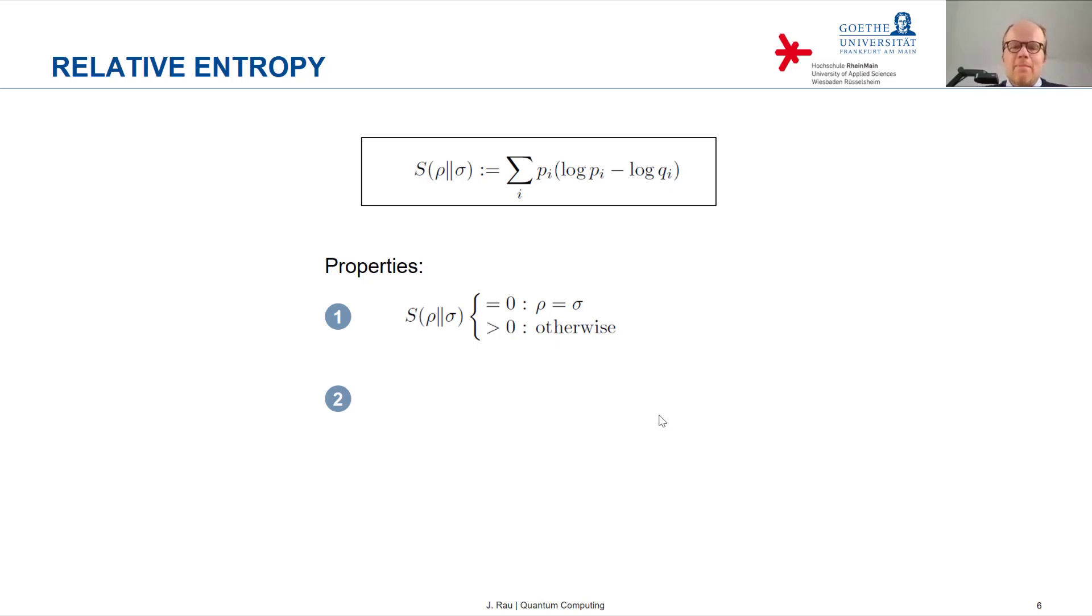It's not in the mathematical sense a metric, however, because the definition of the relative entropy is not symmetric in rho and sigma. So the relative entropy of sigma and rho is not the same as the relative entropy of rho and sigma. If you interchange the two arguments, it's not identical. You can show that it's approximately symmetric if rho and sigma are close to each other. Then you can do a Taylor expansion in the delta probabilities, and you see it's approximately quadratic in the deltas, in the probability deltas. So it's approximately symmetric, but this symmetry doesn't extend to distributions that are further apart. So I think mathematically it's called a divergence but not a metric.